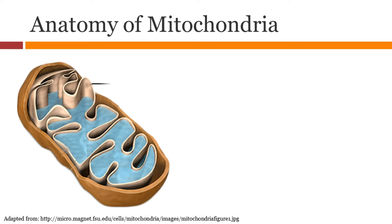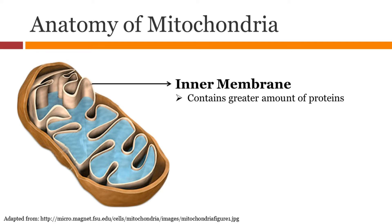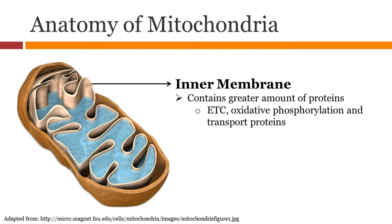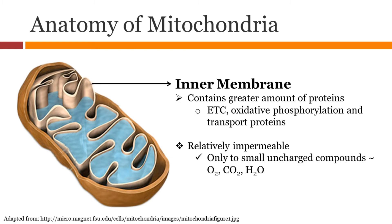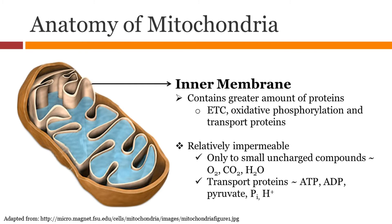The inner membrane contains many proteins for the electron transport chain, oxidative phosphorylation, and various transport proteins. It is not permeable at all, with a few exceptions. Small uncharged compounds such as oxygen, carbon dioxide, and water can diffuse through. It has transport proteins for ATP, ADP, pyruvate, and protons.